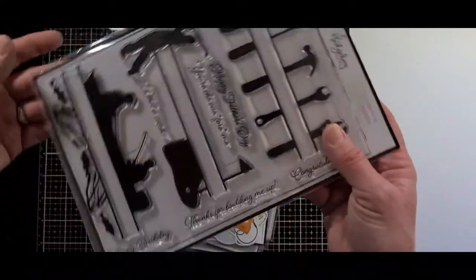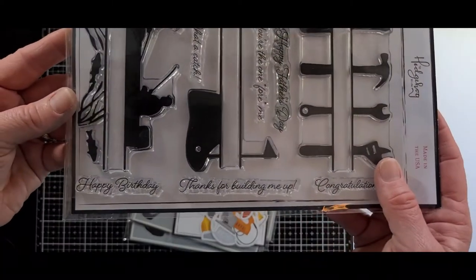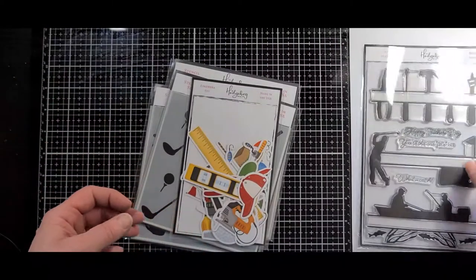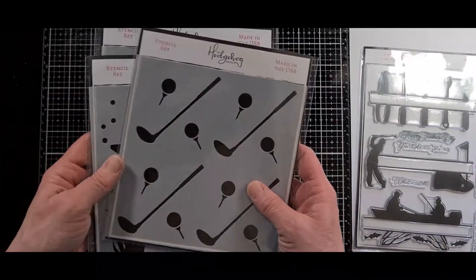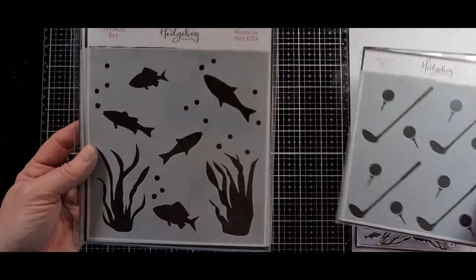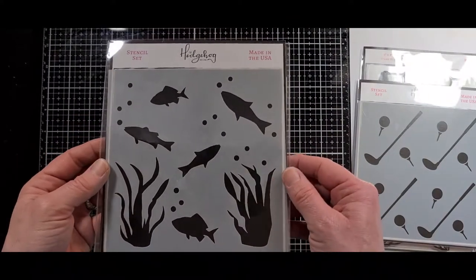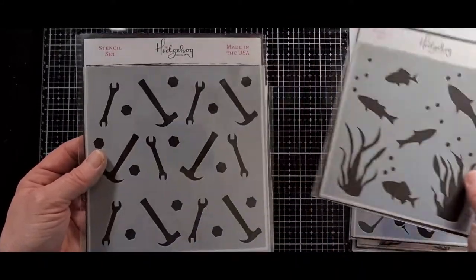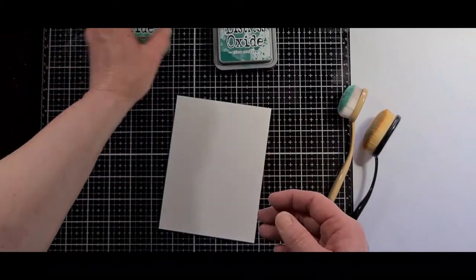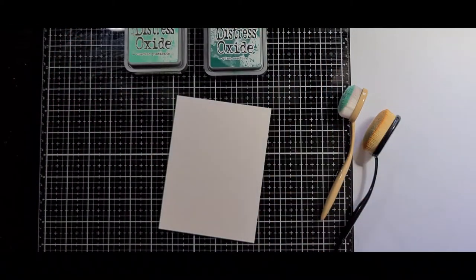The stamp set that I'm going to be using from the box is called Menoplay. It is filled with three fun leisure themed activity stamp images and some sentiments that coordinate with each of them. And then I'm going to be using the three stencils that came in the box. The first one is called Tea Time, Lure Me In, and then we have Tool Time. And then I'm also going to be using the Coordinating Pack of R&R Ephemera from the box.